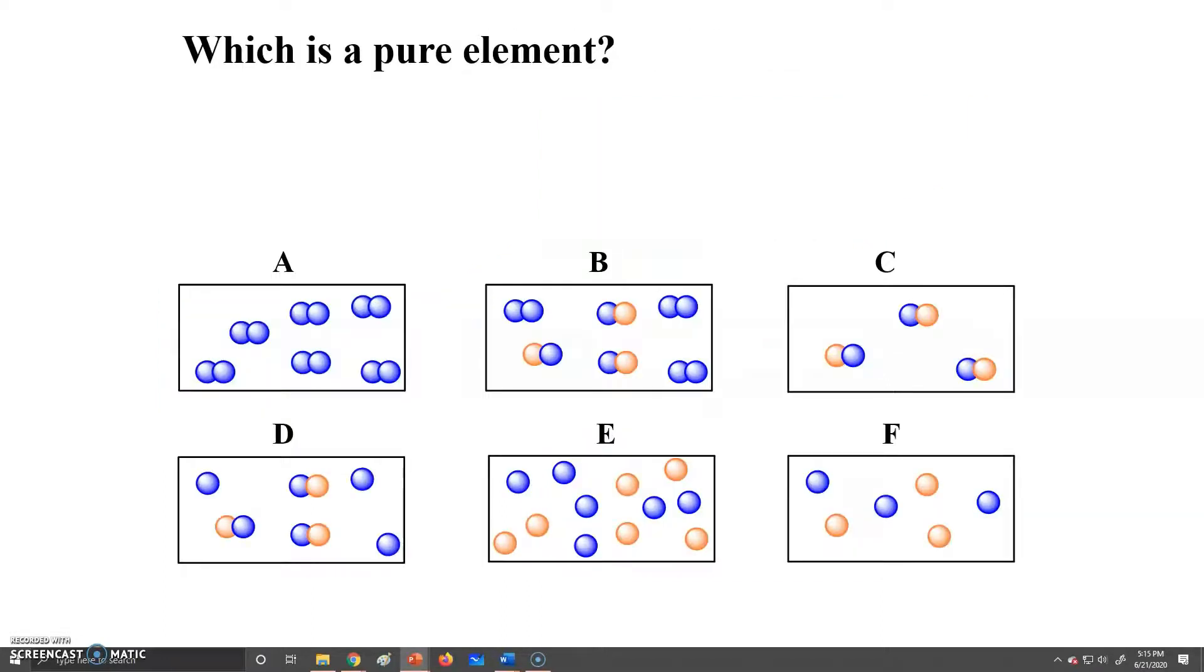If we wanted to look at these pictures and determine which one is a pure element, well, if each different kind of atom has a different color, we want to look at one where there's all the same color. So that would be A.